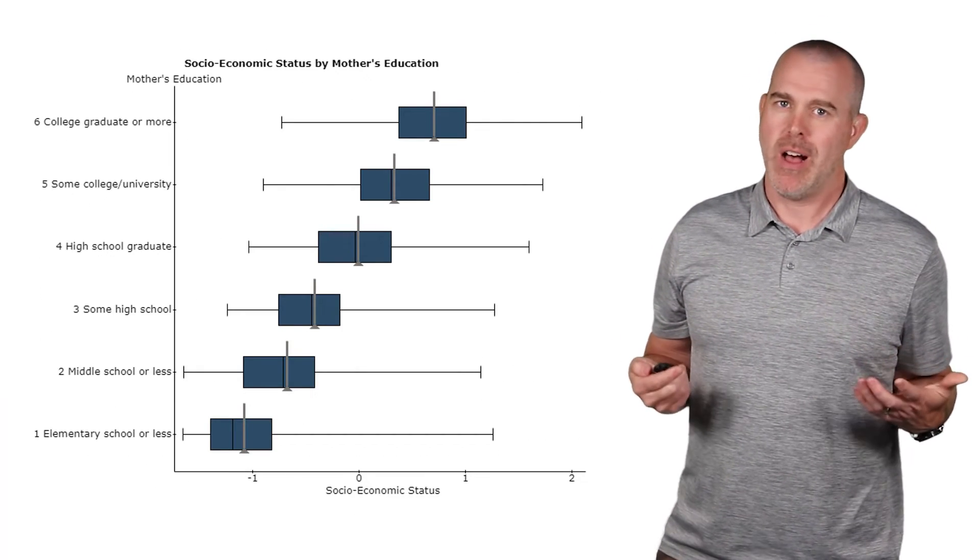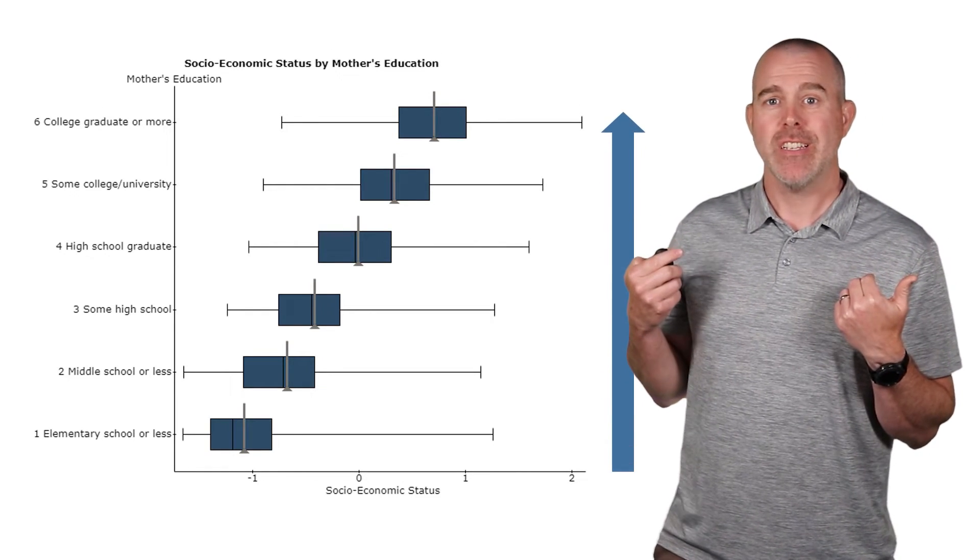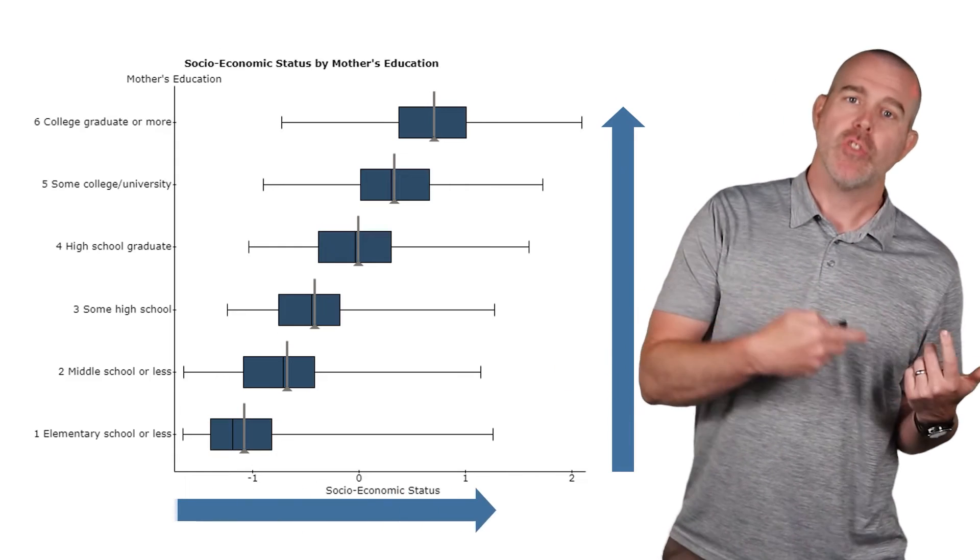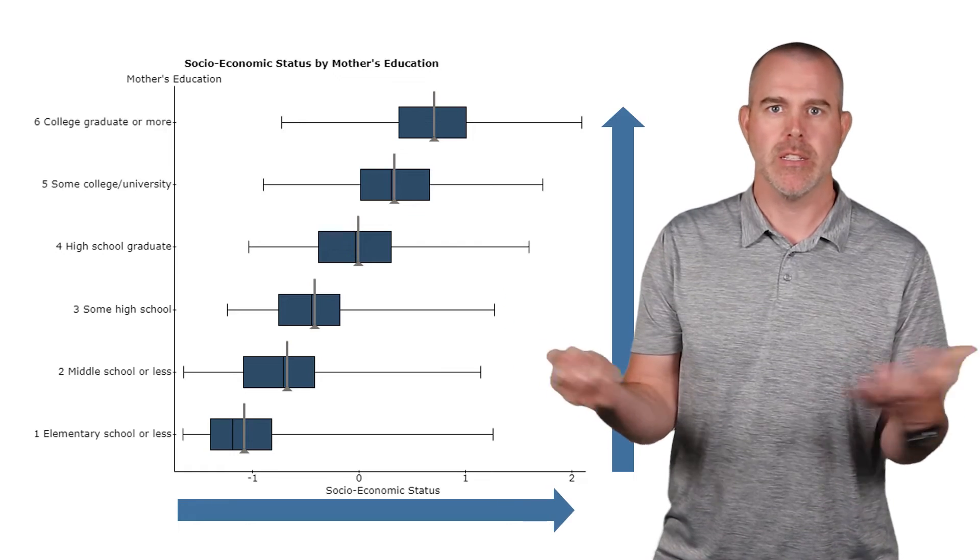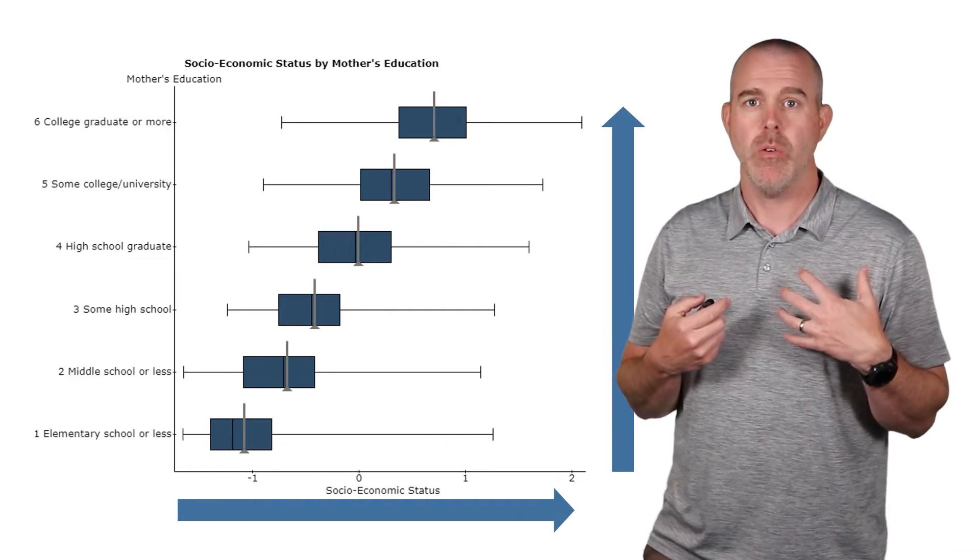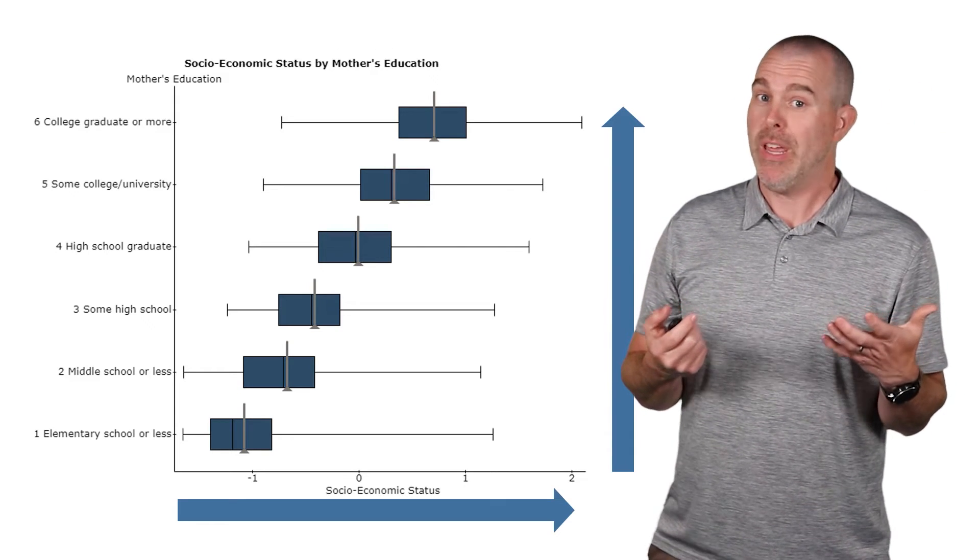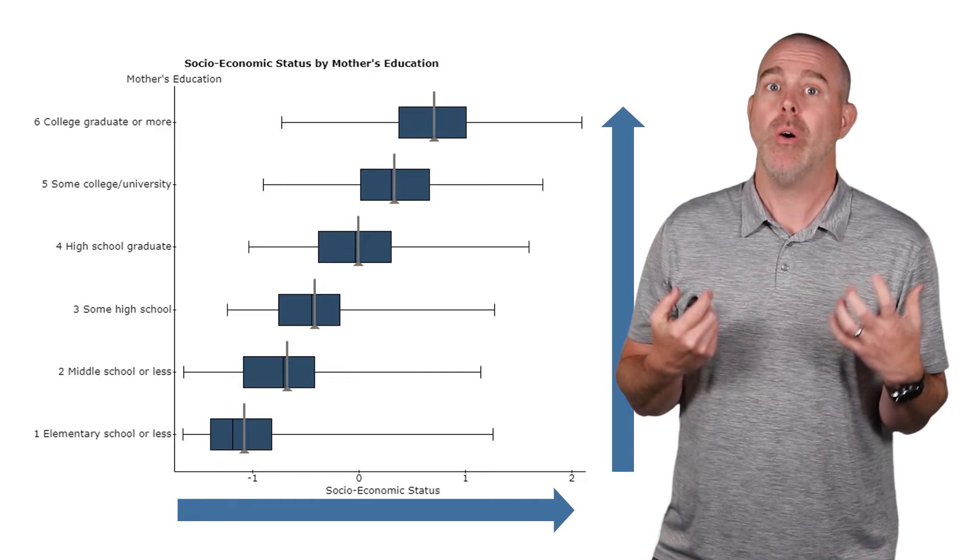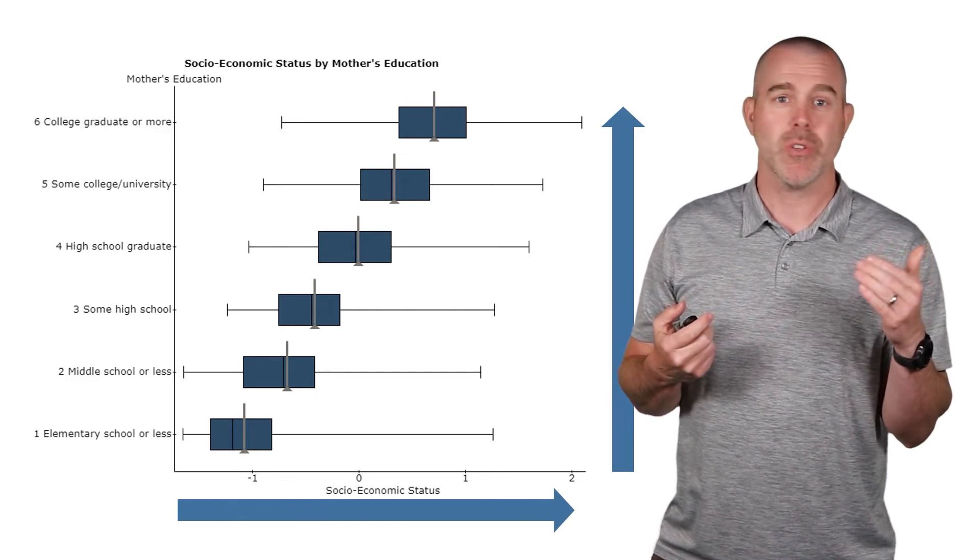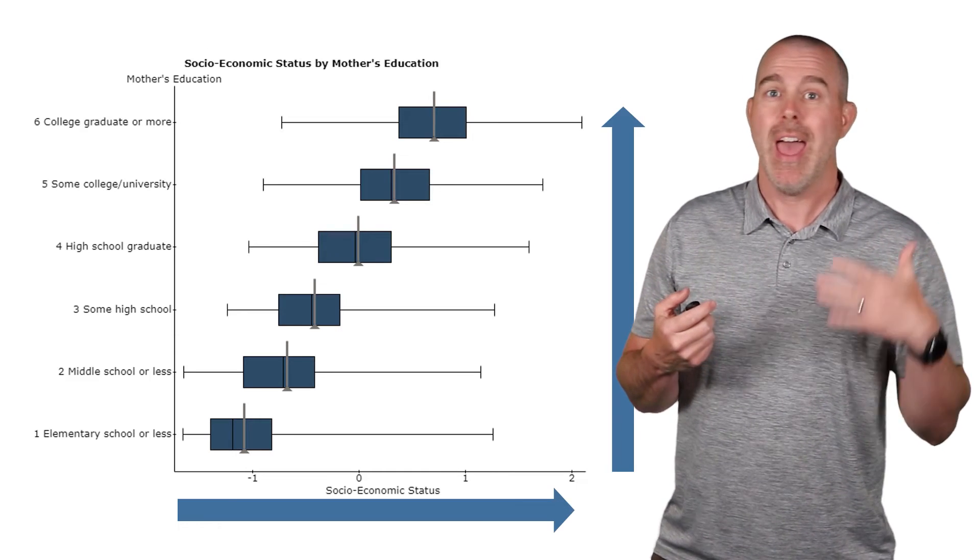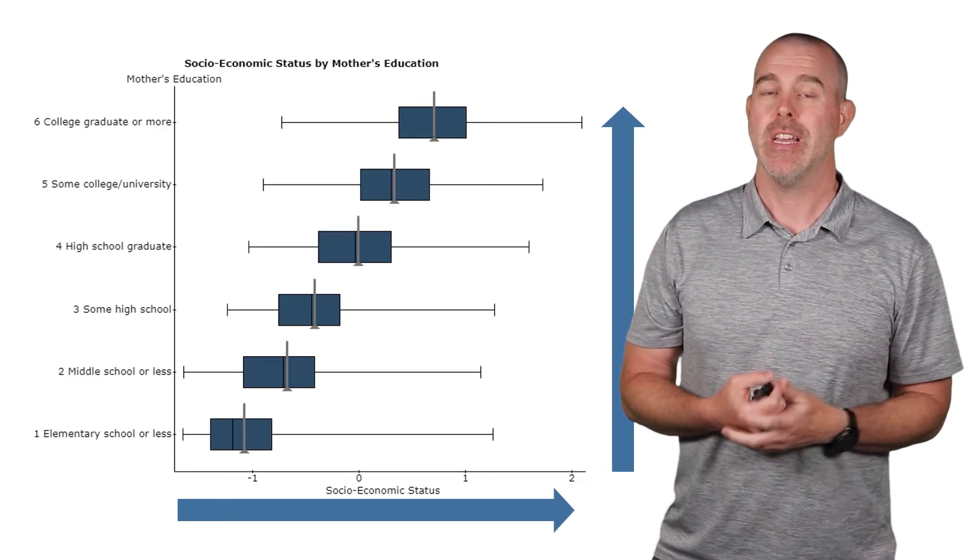And again, that reinforces what we saw on that box plot. It looks pretty clear here that as education level increases, socioeconomic status increases as well, which makes sense. The more educated your mother is, the more likely you are to be educated and pursue higher education as well. To me, it's kind of startling how almost linear this relationship is. Even at the lower levels, middle school or some high school or high school, every little bit of education for the mother makes a difference in the child's education. This is fascinating.